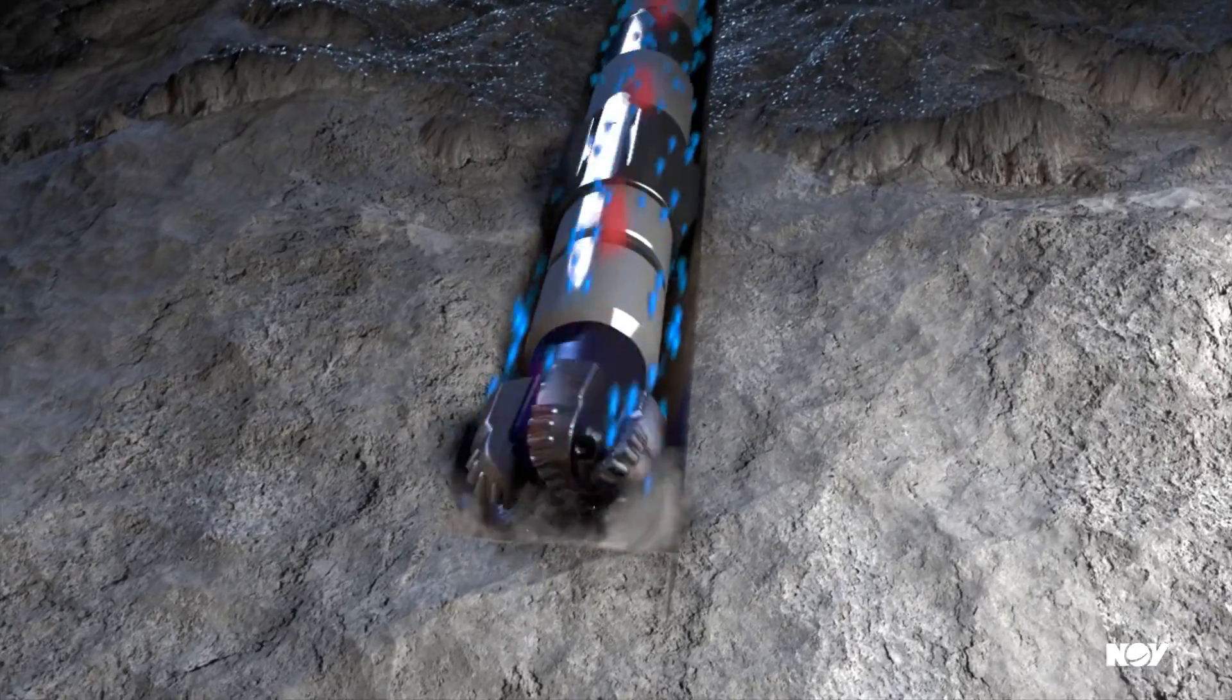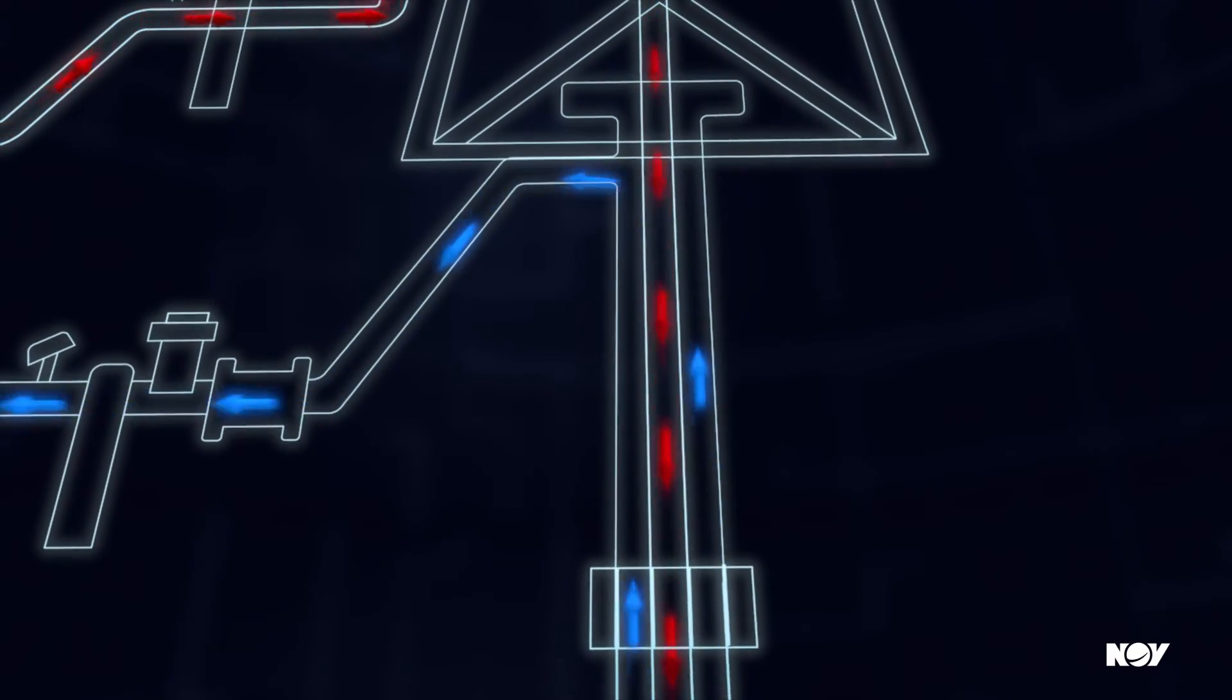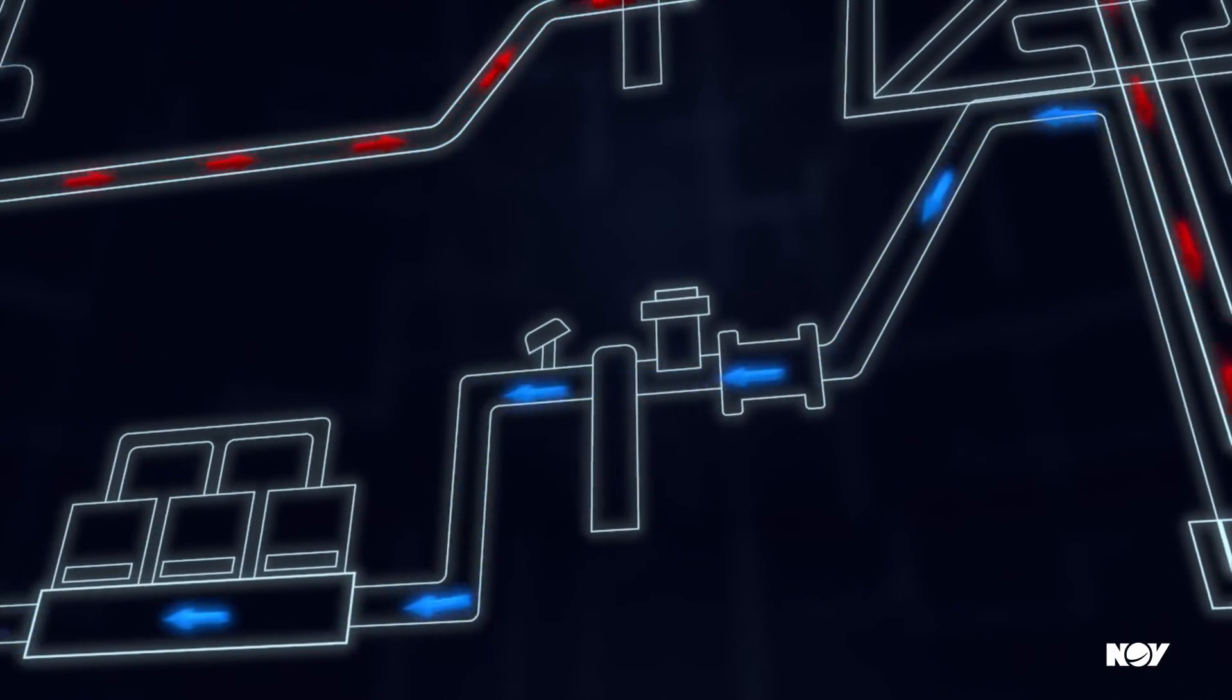Blue arrows indicate a mix of mud and drilled solids which returns through annulus, blowout preventer, riser, diverter and then into the shaker room for processing.